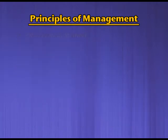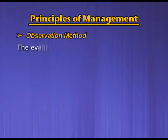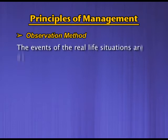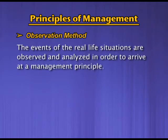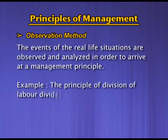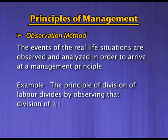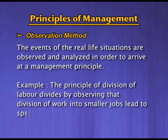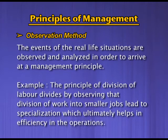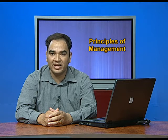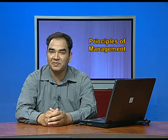Our second method is the observation method. In the observation method, the events of real-life situations are observed and analyzed in order to arrive at a management principle. For example, the principle of division of labor was derived by observing that division of work into smaller jobs leads to specialization, which ultimately helps in efficiency in operations. So these are the two ways through which management principles are derived.